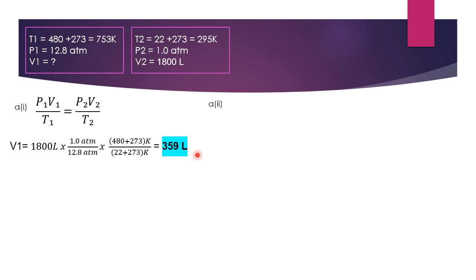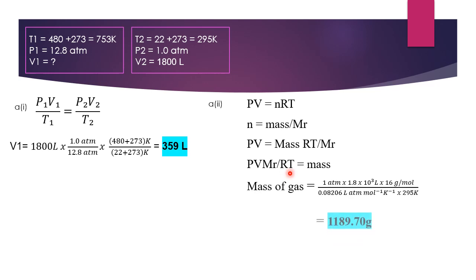For A2, find the mass. So first of all, we are going to apply the ideal gas equation PV equal to nRT. And then we convert because n equal to mass over molar mass. And then you substitute n mass over molar mass into n. Then you get this equation. And then you try to change until in terms of mass. So mass equal to PV molar mass over RT. Then substitute, you get the answer, 1189.7 grams.